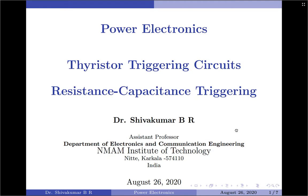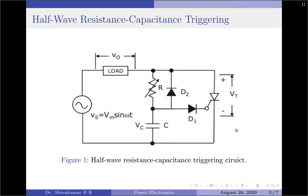With that, we come to the RC triggering technique. We first start with the half wave resistance capacitor triggering, then continue to the discussion of full wave resistance capacitance triggering. Consider the RC half wave circuit as shown here. By using the RC network as shown in the diagram, a larger variation in the triggering angle alpha can be obtained by changing the phase and amplitude of the gate current. For the given half wave RC triggering circuit, the triggering angle can be varied from 0 to 180 degrees by varying the value of resistor R.